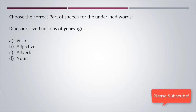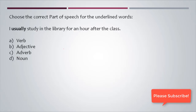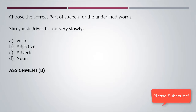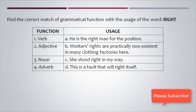'Dinosaurs lived millions of years ago' — 'years' represents a countable thing, so it is a noun. 'I usually study in the library for an hour after class' — 'usually' tells how the work is done on a regular basis, so it is an adverb. Assignment question B: tell me in the comment section which part of speech 'slowly' represents in the sentence shown.